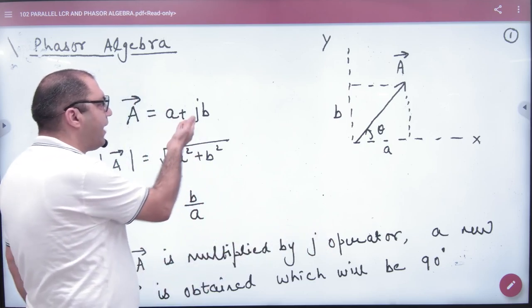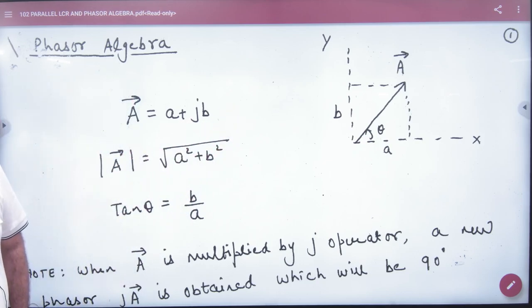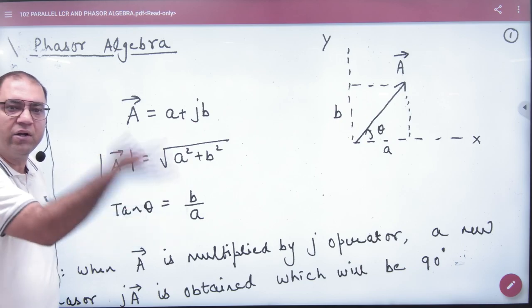Many people think i cap, j cap. No, j cap is not. It is J operator. This is J operator, which is 90 degree anticlockwise rotation.